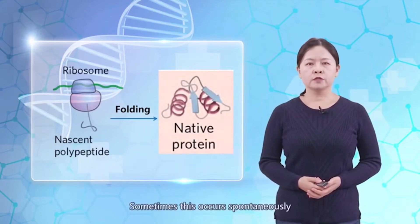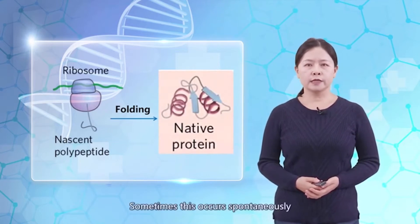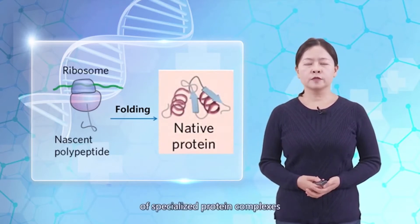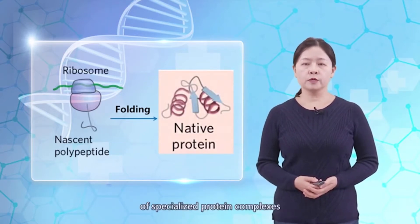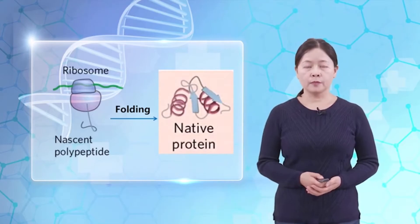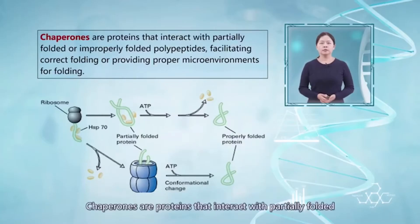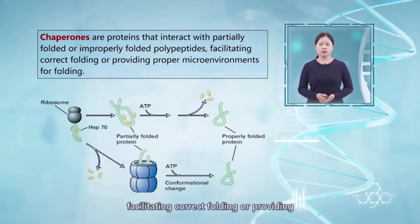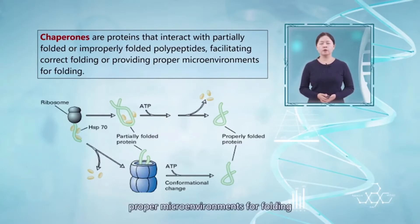Sometimes this occurs spontaneously, but more often it requires the assistance of specialized protein complexes called chaperones. Chaperones are proteins that interact with partially folded or improperly folded polypeptides, facilitating correct folding or providing proper microenvironments for folding.